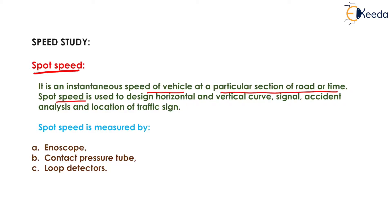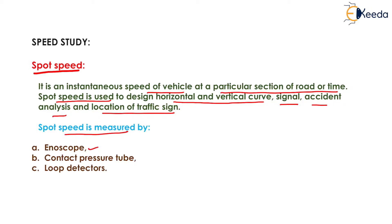Spot speed is used to design horizontal and vertical curves, signals, accident analysis, as well as location of traffic signs. If the speed of a vehicle at a particular cross section of road is very high, then the peripheral vision will decrease, so we have to fix traffic signs at such an angle that they are easily visible to vehicles. Spot speed is measured by instruments known as Enoscope, Contact Pressure Tube, and Loop Detectors.